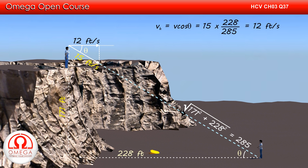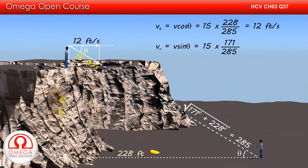Similarly, the initial vertical speed of the projectile is V sin theta, or 15 × 171 ÷ 285, that is 9 feet per second.